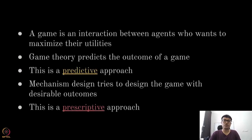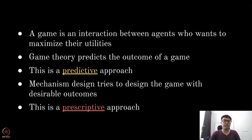This course has two complementary parts: game theory and mechanism design. A game is defined as an interaction between agents who always want to optimize their own objectives. In game theory, we provide predictive guarantees about the outcomes of a given game.